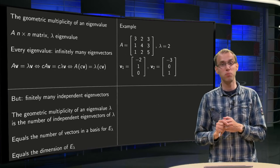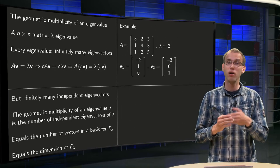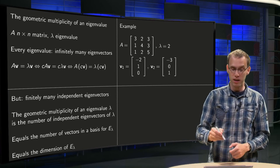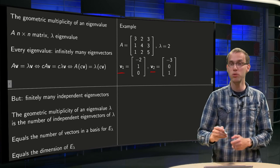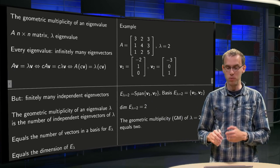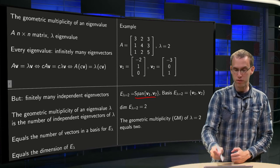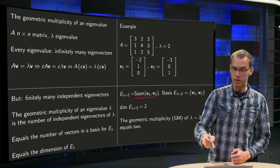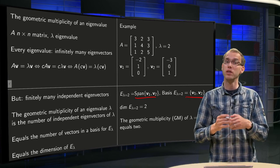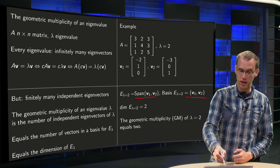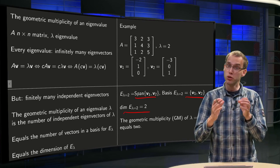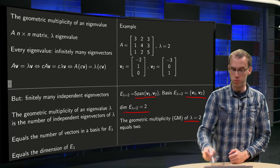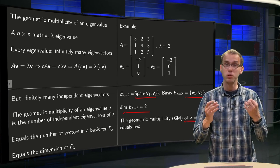Let's look at a small example we have seen before. For this matrix, lambda = 2 was an eigenvalue, and we found two independent eigenvectors v1 and v2. So the eigenspace E_lambda equals the span of {v1, v2}, and a basis for E_lambda is the set {v1, v2}. The dimension of this eigenspace equals 2, because there are two vectors in the basis, so the geometric multiplicity of lambda = 2 is equal to 2.